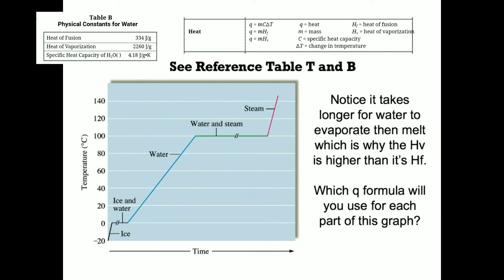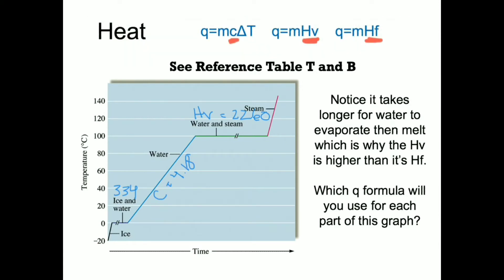That constant is underlined here in red. It is either C, the specific heat capacity of water, H sub V, the heat of vaporization, or HF, the heat of fusion. Notice on the graph, I've put where we're going to use these three constants. So when the temperature changes, we're going to use Q equals MC delta T. C, the specific heat capacity of water, is 4.18 joules per degree Kelvin.